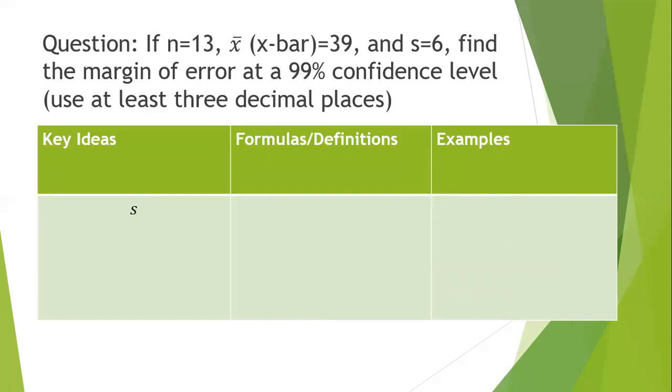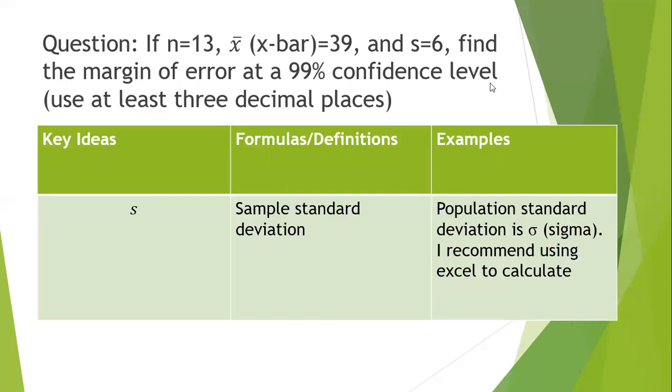S is your sample standard deviation. The population standard deviation uses the symbol sigma, like an O with a tail on the top. It's also a Greek letter and I highly recommend using Excel. I'm not going to go into that for this video because we're not making the calculations. The standard deviation tells us how spread out the data is.